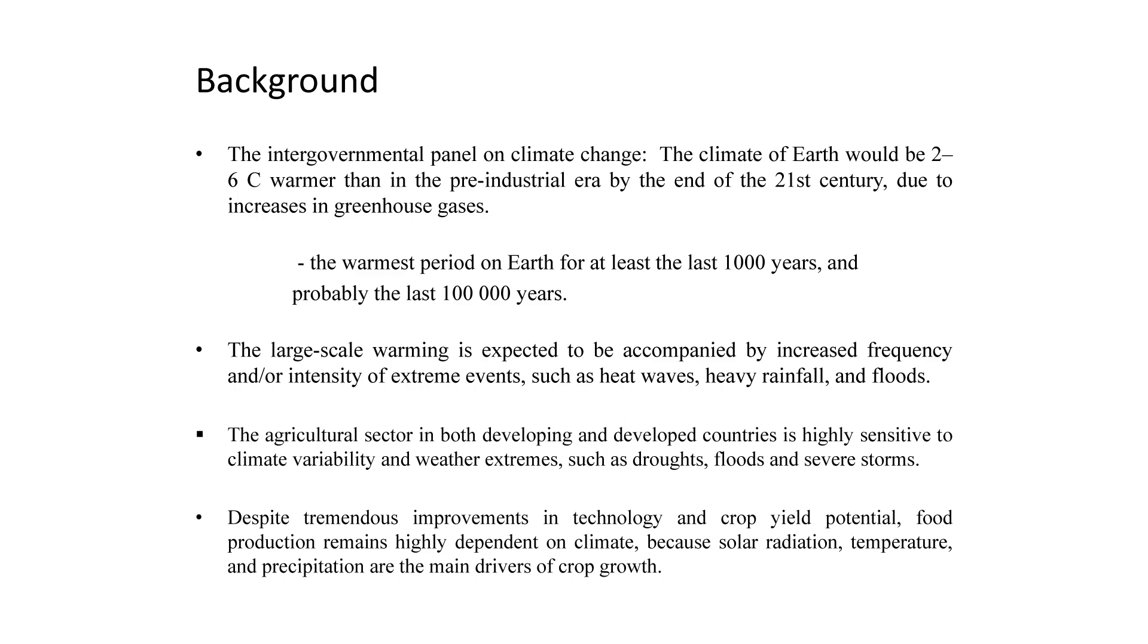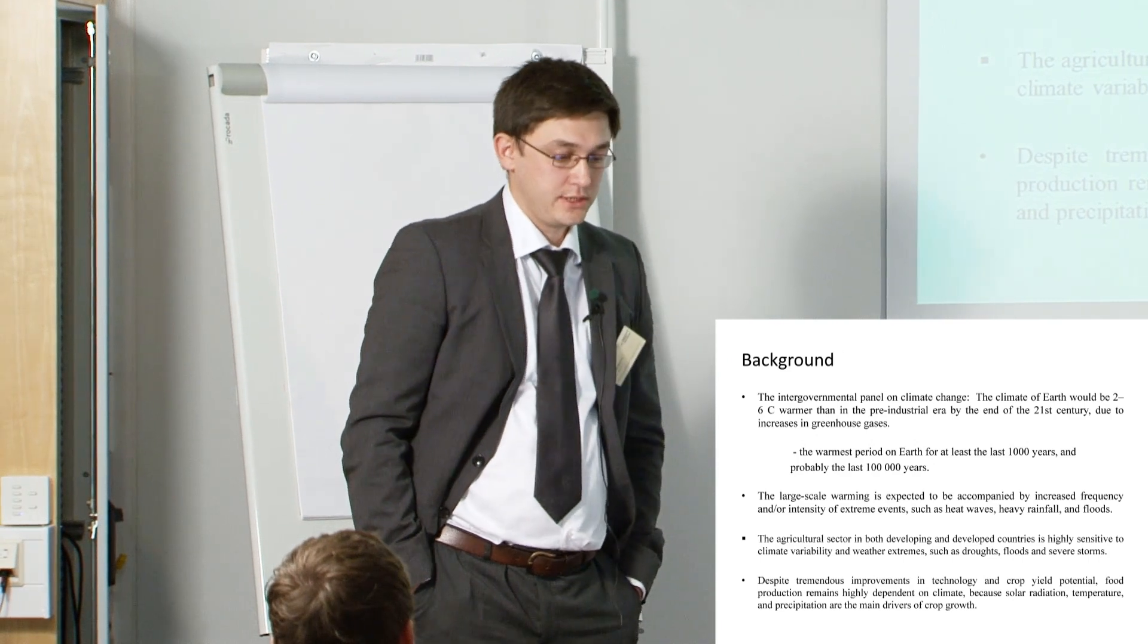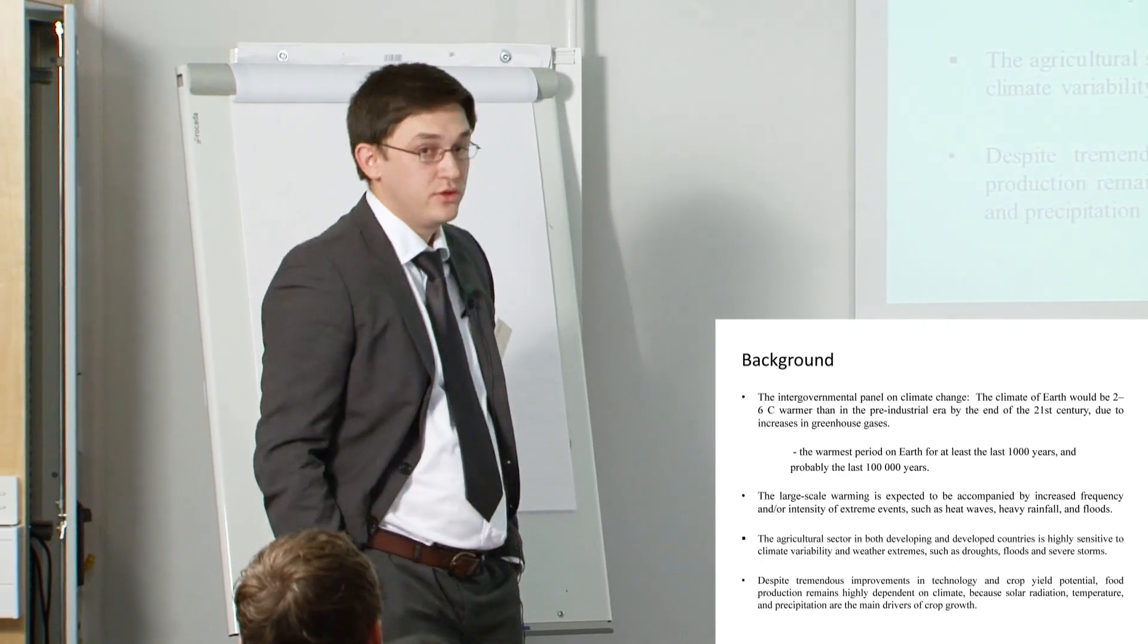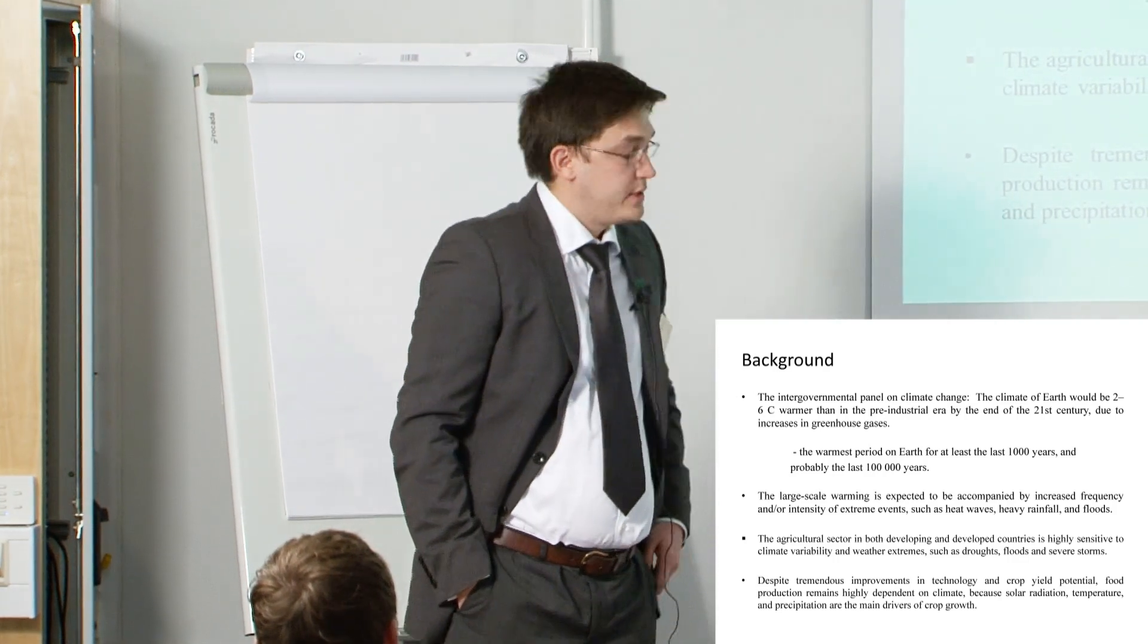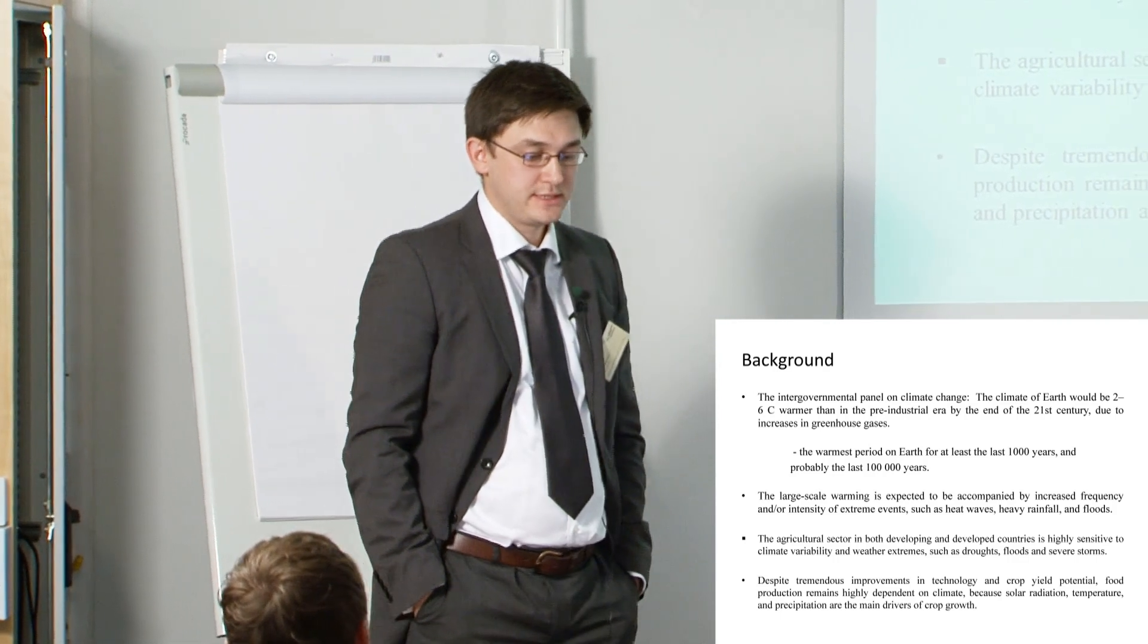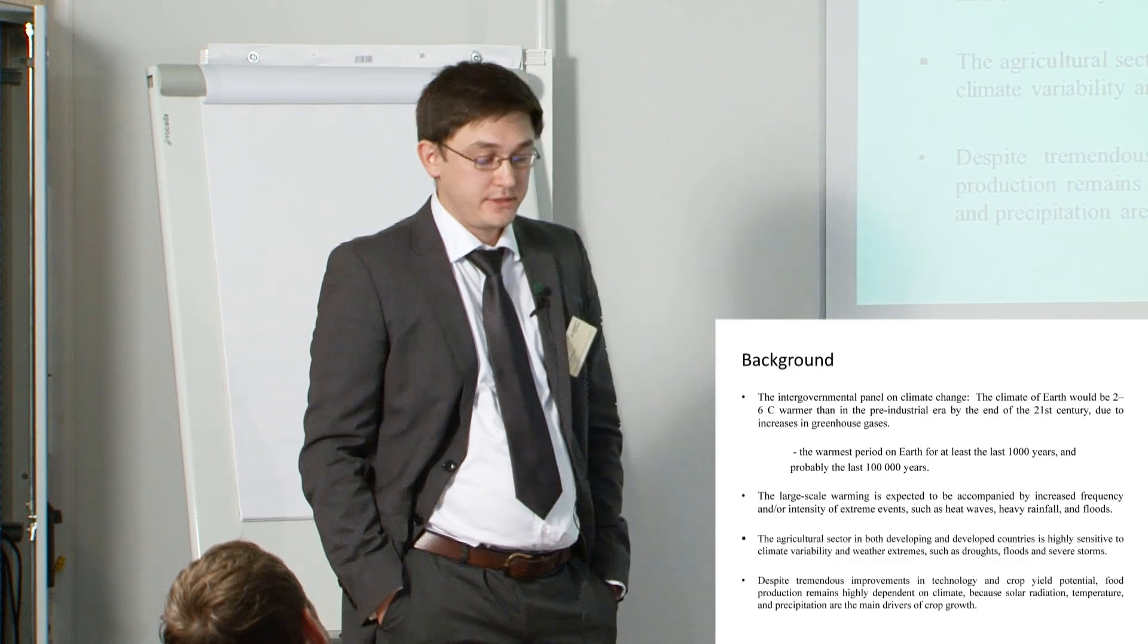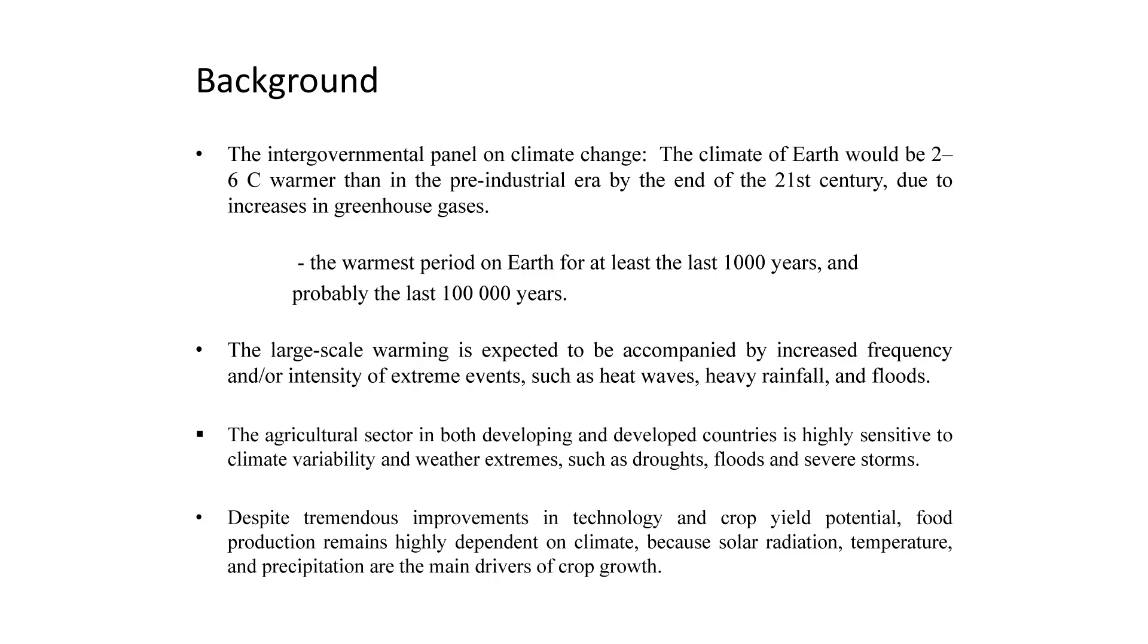We can see that the Intergovernmental Panel on Climate Change mentioned that the climate of Earth would be 2 to 6 Celsius more than in the pre-industrial era by the end of the 21st century due to increases in greenhouse gases. We can expect the warmest period on Earth for at least the last 1,000 years and probably the last 100,000 years.